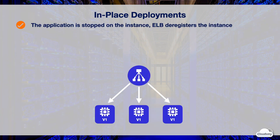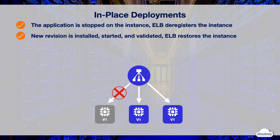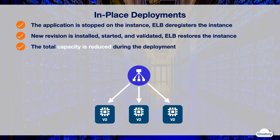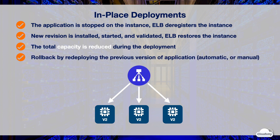When you use in-place deployment, CodeDeploy first stops the application on one of the target instances in the deployment group. The load balancer deregisters the instance to make it out of service. CodeDeploy installs the latest application revision on the target instance. The new version of the application is started and validated. Once the deployment to the target instance is completed, the load balancer restores the instance to service. CodeDeploy repeats the deployment steps for the remaining instances until all instances have the latest application revision. During the in-place deployment, because the target instance is stopped before the new version is installed, the total capacity is reduced and your application performance might be impacted. If you want to roll back the deployment, you can only redeploy the previous version of the application. CodeDeploy supports both automatic rollbacks and manual rollbacks.